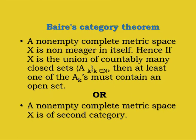Baire's Category Theorem states that a non-empty complete metric space X is of second category — that is, a non-empty complete metric space X is non-meager in itself. Hence, if X is the union of countably many closed sets Aₖ for k belonging to ℕ, then at least one of the Aₖ's must contain an open set.